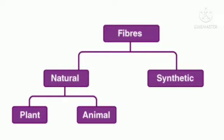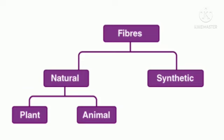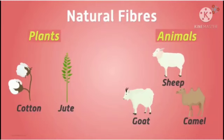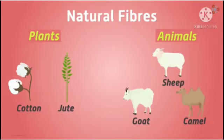Fibers are divided into two categories: Natural Fibers and Synthetic Fibers. Natural fibers are obtained from natural sources such as plants and animals. Cotton and jute are examples of plant fibers.